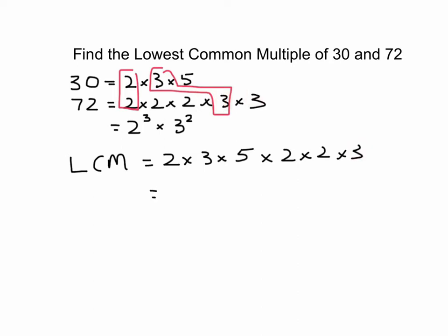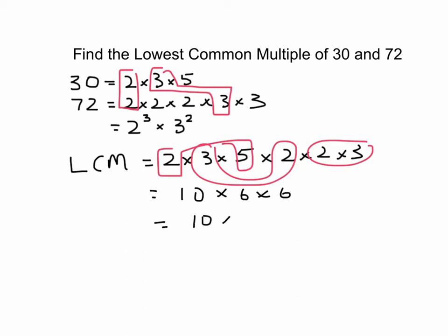And your final answer is 2 times 3 times 5 times 2 times 2 times 3. I like to keep it simple, so let's put this together. That will be 10 and then we will have a 6 there and another 6. So what we have is 10 times 6 times 6, which is 10 times 36, which is 360.